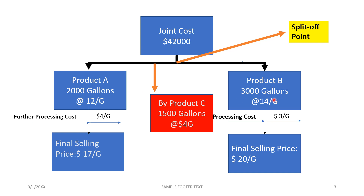One more point I wanted to make clear: along with the main products, sometimes during a common manufacturing process we get something known as a byproduct. This byproduct is generally very low in the quantity produced as well as in total value compared to the other products. Hence, the treatment of byproducts depends upon whether the total value is material or immaterial.